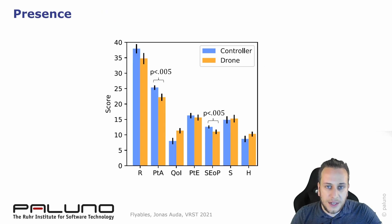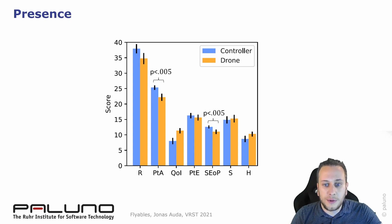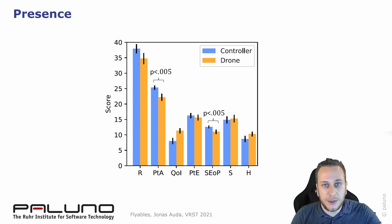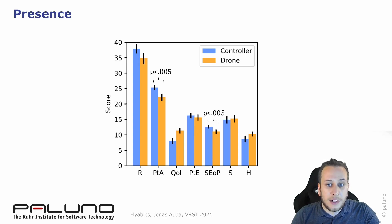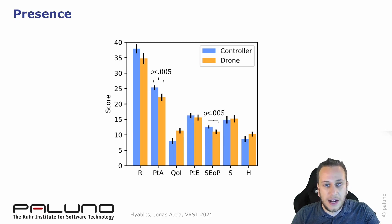To assess presence, our participants filled out a presence questionnaire. Overall, the VR controller scored higher than Flyables. However, for quality of interface and haptics, Flyables scored higher. Two of the scores were significantly different: possibility to act and self-evaluation of performance — in both, standard VR controllers scored a higher value.